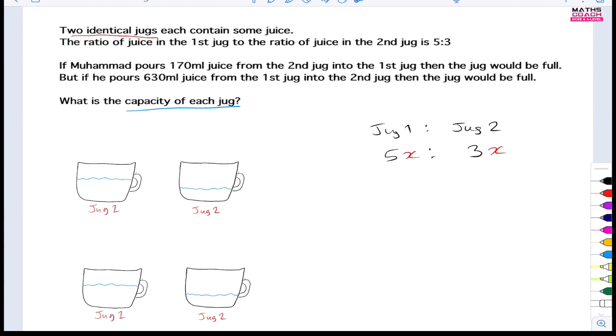Now let's go ahead and read more of the question. It says if Muhammad pours 170 milliliters of juice from the second jug into the first jug, so from here into there, he's going to pour 170 milliliters of juice. Then what happens? This first jug would become full.